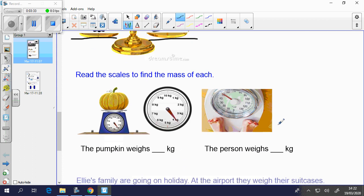Read the scales to find the mass of each. Because the scale is quite small, there is a larger image here for you to do. And here is a weighing scale. Have a go now. The pumpkin weighs 4 kg. You can see that it's pointing at the 4. And the person weighs 50 kg.